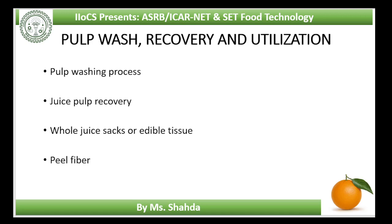Peel fiber: considerable interest has been generated recently in using fiber in human diet. It is a by-product left after pectin recovery from peel of many fruits like citrus, apple, mango, etc. The pectin-free dried peel contains about 60% dietary fiber, ranking with cereal bran in importance. The manufacturing process involves chopping the residue into small pieces, reacting with calcium hydroxide, pressing to remove soluble sugars and water, blending with sesame flour, dehydration to 8% moisture, and milling to an acceptable small particle size.